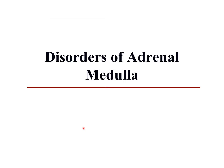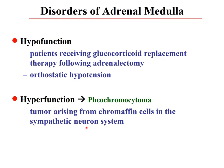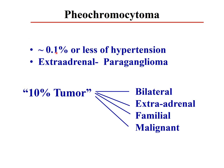Looking at the adrenal medulla: in hypofunction, there are no major clinical symptoms — only patients receiving glucocorticoid replacement after adrenalectomy may manifest orthostatic hypotension. The catecholamines from the medulla mainly maintain blood pressure. Hyperfunction causes pheochromocytoma — a tumor arising from chromaffin cells in the sympathetic nervous system. It is rare, accounting for about 0.1% or less of all hypertensive patients. It is called the '10% tumor': 10% bilateral, 10% extra-adrenal (usually perivertebral sympathetic ganglia), 10% hereditary, and 10% malignant.